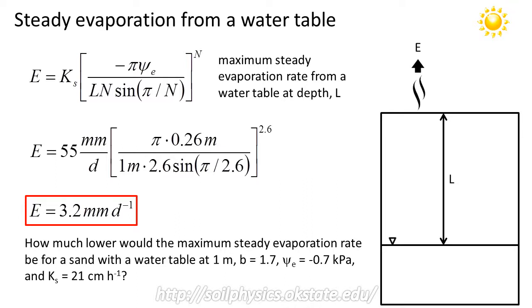I'd like you now to work another example by yourself. How much lower would the maximum steady evaporation rate be for a sand if the water table was at 1 meter depth, given that the B value for a sand is approximately 1.7, and the air entry potential is minus 0.7 kilopascals, and the saturated hydraulic conductivity is 21 centimeters per hour.